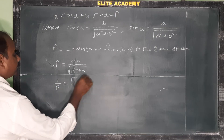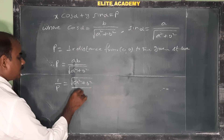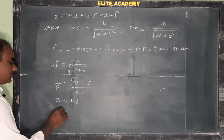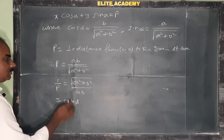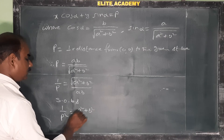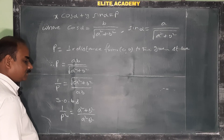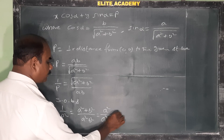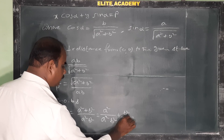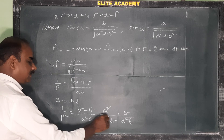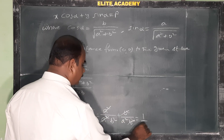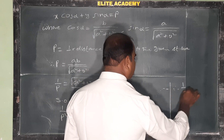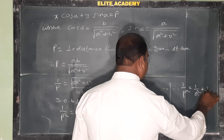Now squaring both sides of p = ab/√(a²+b²), we get 1/p² = (a²+b²)/(a²b²). Separating the fractions: a²/(a²b²) + b²/(a²b²) = 1/b² + 1/a². Therefore, 1/p² = 1/a² + 1/b², which is the required relation.